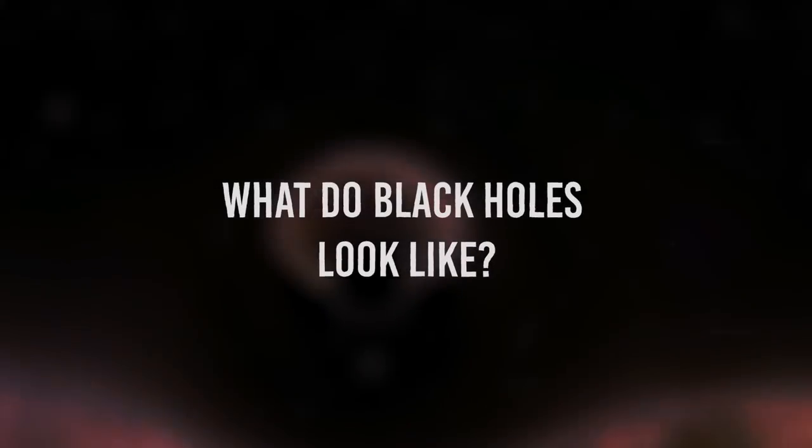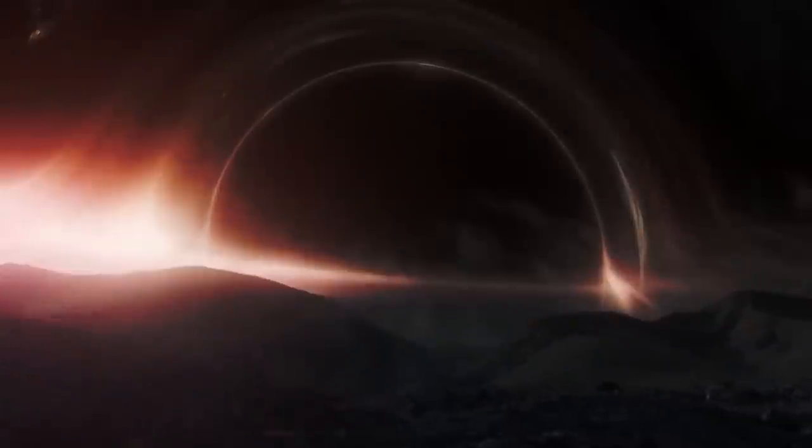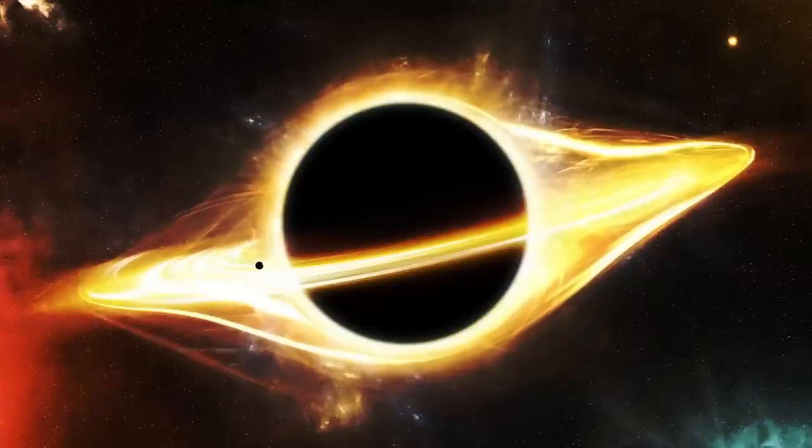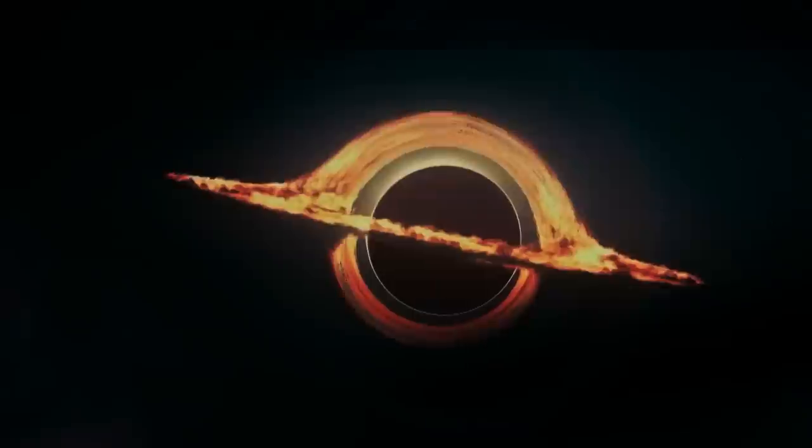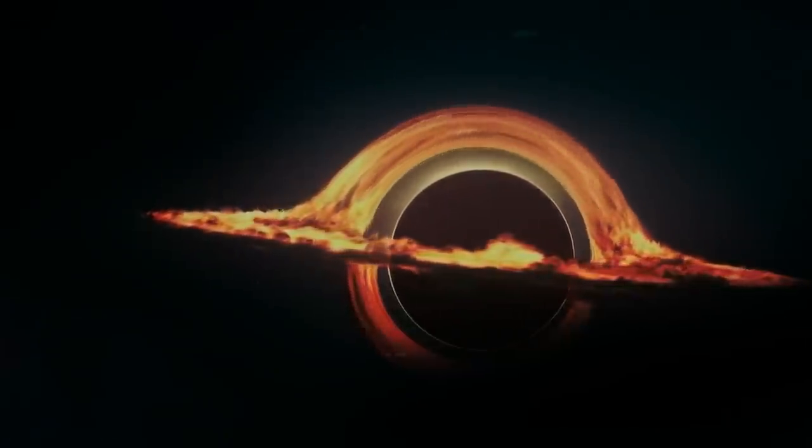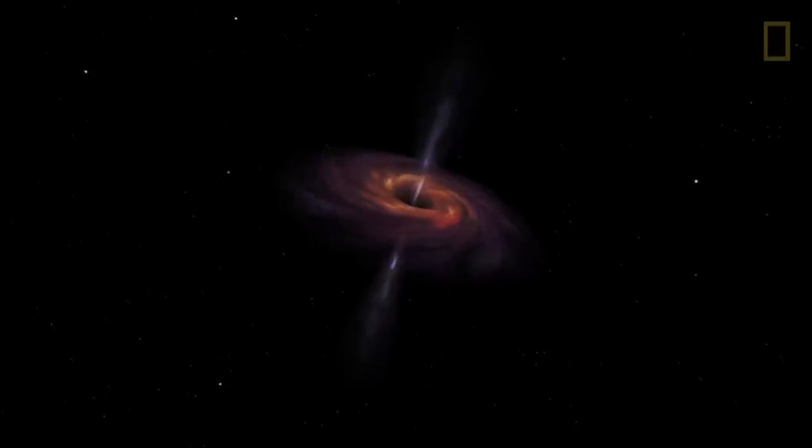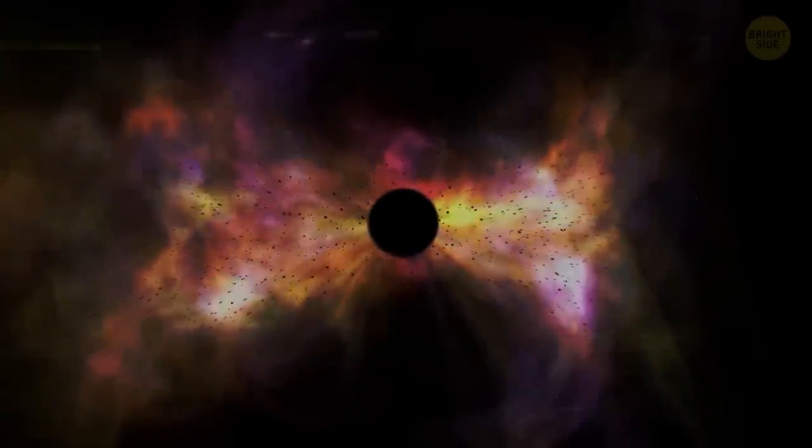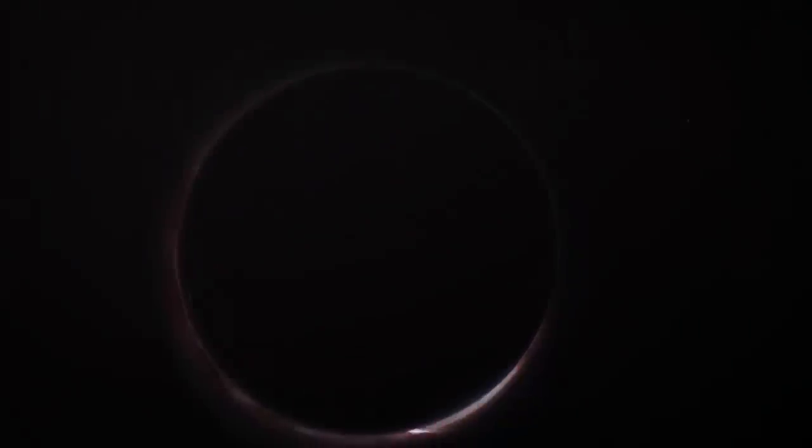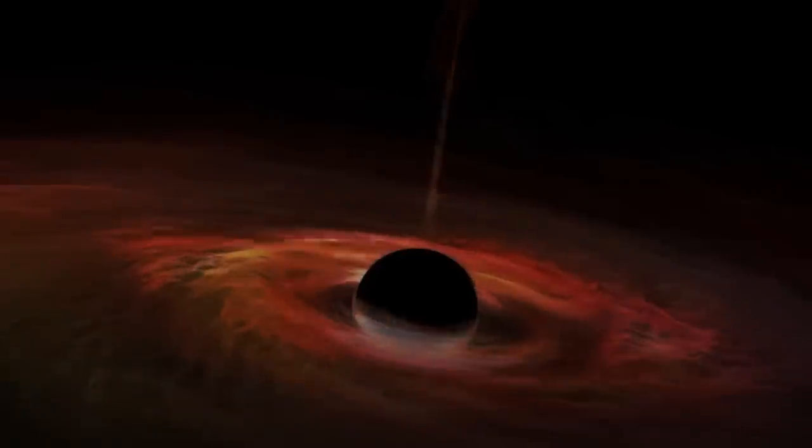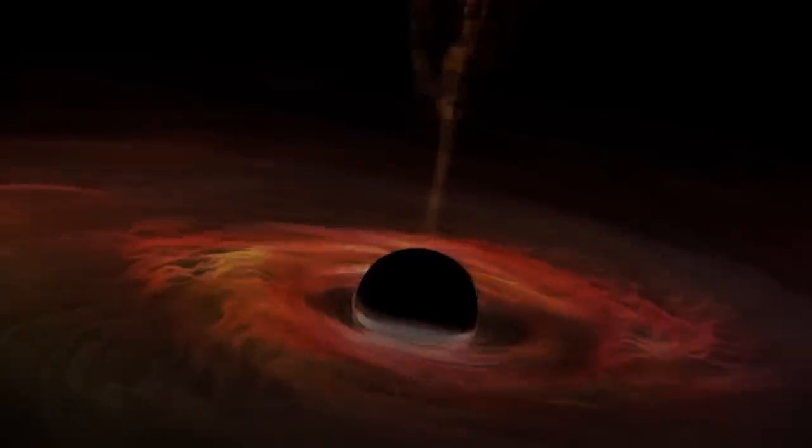What do black holes look like? The singularity, together with the outer and inner event horizons, are the three layers of black holes. A black hole's event horizon is the area surrounding its mouth beyond which light cannot travel. A particle cannot depart the event horizon once it has done so. Across the event horizon, gravity remains constant. The singularity, or one point in space-time where the mass of the black hole is concentrated, is the area inside a black hole where the object's mass is located.